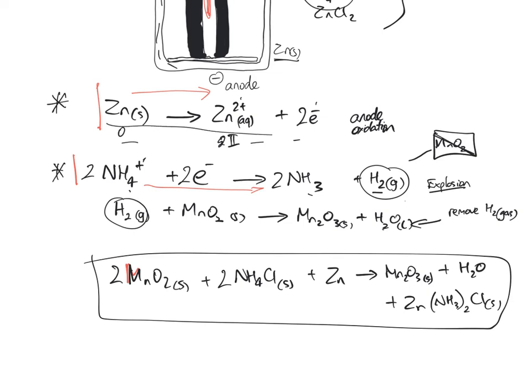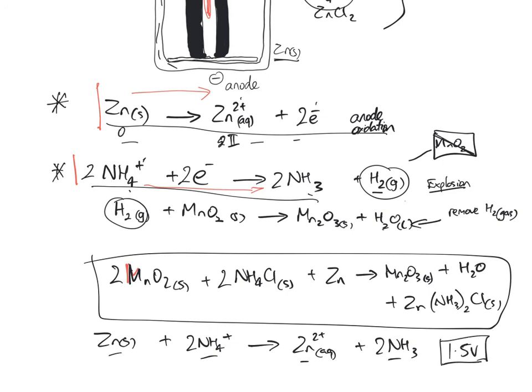The two half reactions are here and here. You could probably simplify that to zinc solid plus 2NH4+ goes to zinc aqueous plus 2NH3. So you've got this one being reduced and this one being oxidized. These are your two half reactions and they give you your voltage which is about 1.5 volts if you look it up. It's actually 1.99 but you don't get that in a real cell.